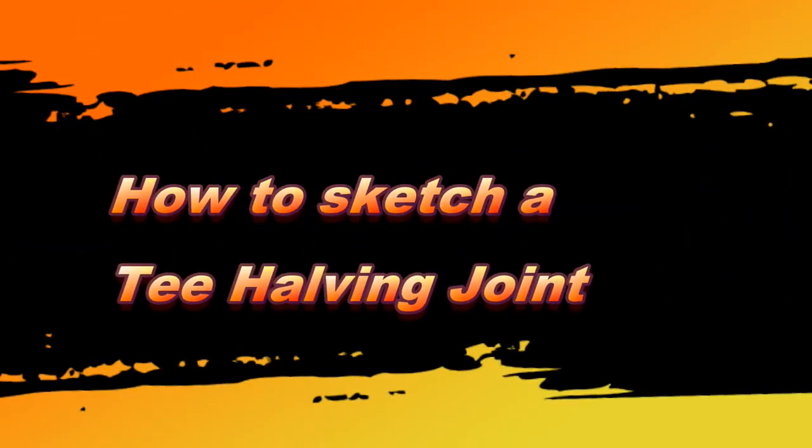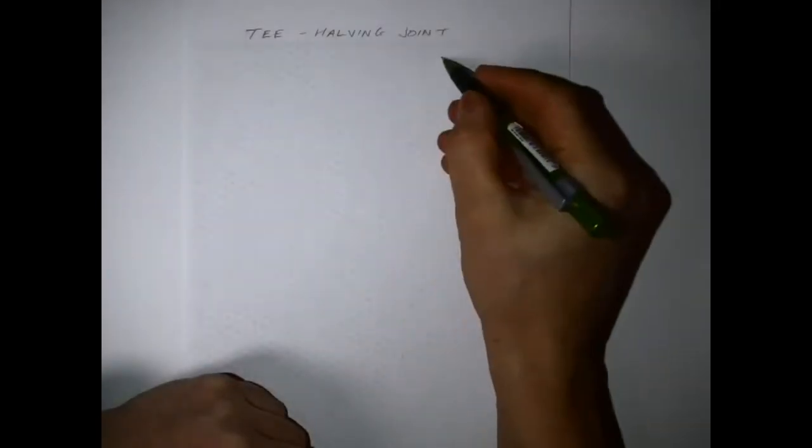In this video I'm going to take a look at how we go about sketching a T halving joint. As usual I've got my isometric grid paper and I'm going to set this up. I've drawn a line at 30 degrees, just a sketch line, light line.